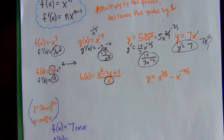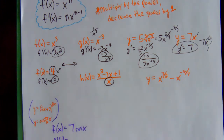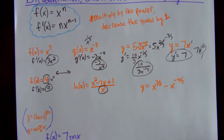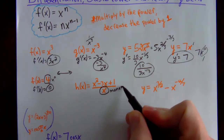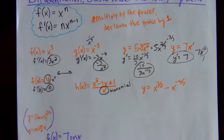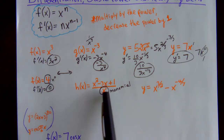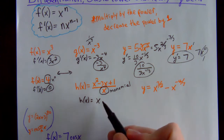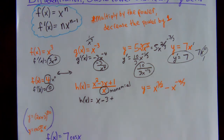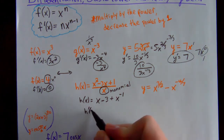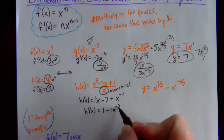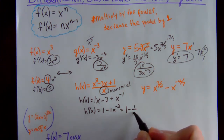Even when we learn the quotient rule, you won't want to use it if you have a monomial in the denominator. If there's an x minus 4 in the denominator, then you must use the quotient rule. But with a monomial denominator, you split it into that-over-that, rewriting each term. For example: x squared over x is x, 3x over x is 3, and 1 over x is x to the negative 1. Then take the derivative: the derivative of x is 1, the derivative of 3 is 0, and multiply by the power and decrease it for x to the negative 1.